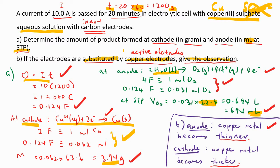The question has for part B: if the electrodes are substituted by copper electrodes, give the observation. Copper electrodes means they are active electrodes, compared to inert electrodes. The observation will be different. Now we use copper. What happened at anode is copper metal becomes thinner. At cathode, copper metal becomes thicker. This is a process which we call electroplating.